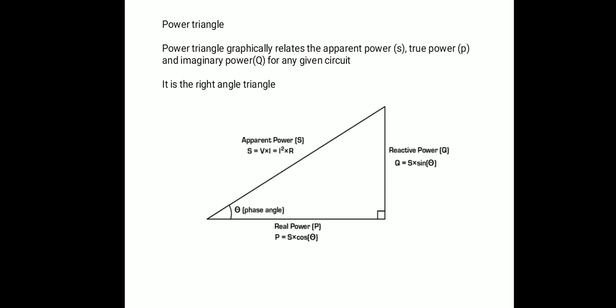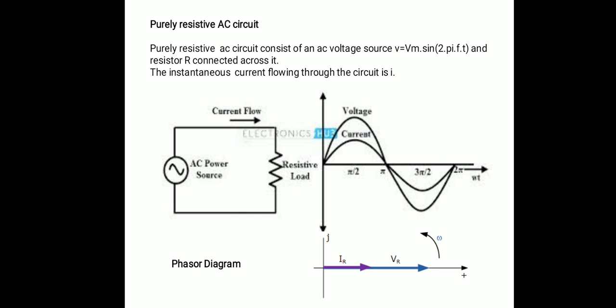The power triangle graphically relates the apparent power S, true power P and reactive power Q. Relating these three graphically gives a right angle triangle, which is called the power triangle, as shown in the figure. It has the diagonal as apparent power S equal to VI, one side as real power P equal to S cos theta which is VI cos theta, and the other side as reactive power Q equal to S sin theta which is VI sin theta.